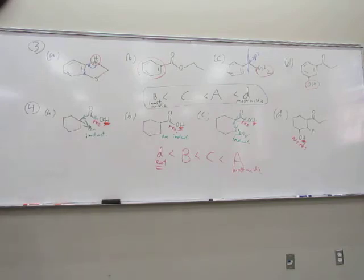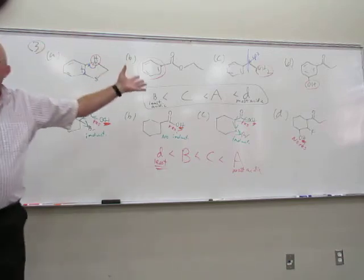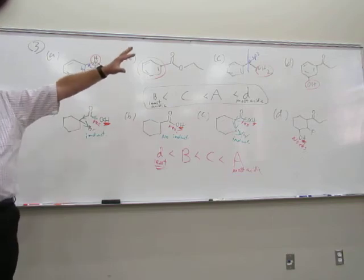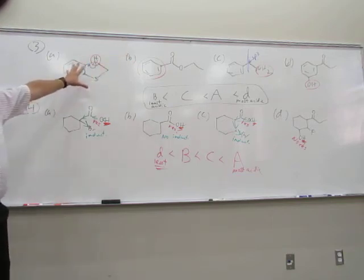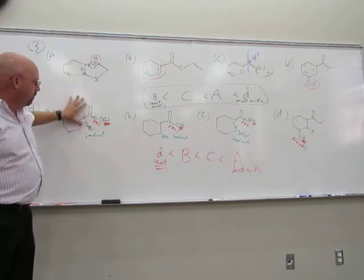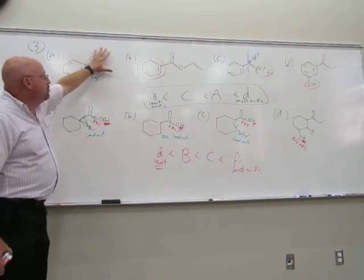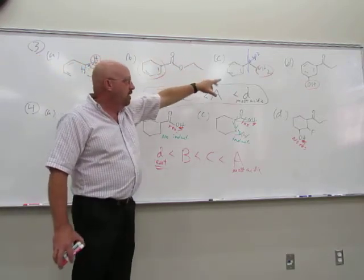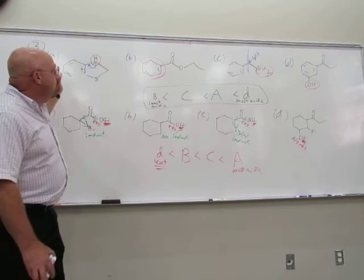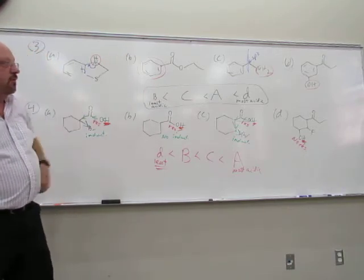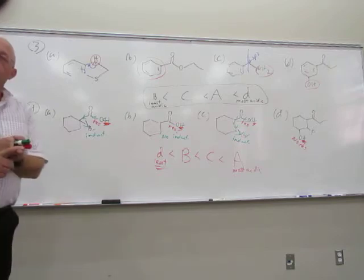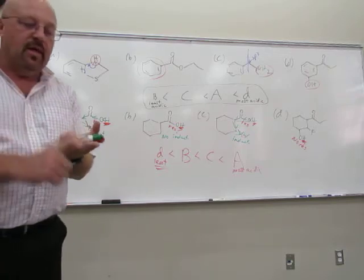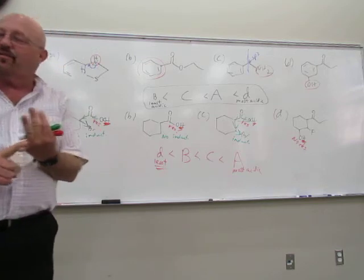Questions? The biggest mistake people make is trying to compare molecules before identifying the most acidic hydrogen. Take them one at a time first — find your most acidic hydrogen, circle it, then start comparing. Always look for periodic trend first, then hybridization, then resonance, and look for inductive effects last.